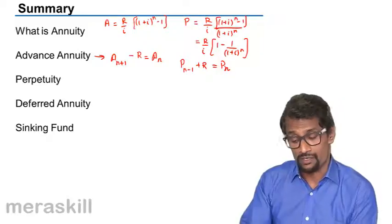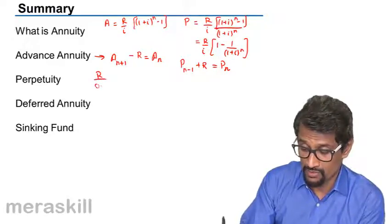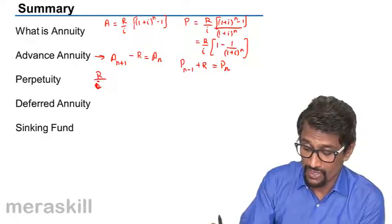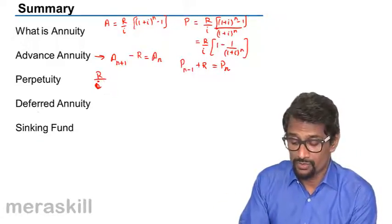Perpetuity we did. Whatever is R upon I itself will be the present value of the perpetuity.